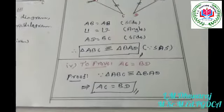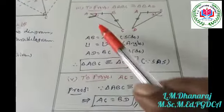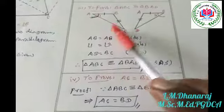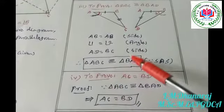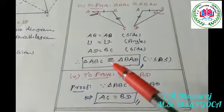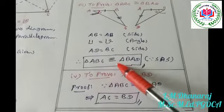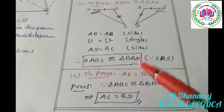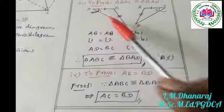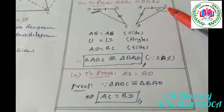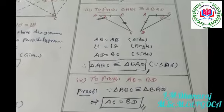Now we have to prove that AC is equal to BD. From the above subdivision, we already proved triangle ABC is congruent to triangle BAD, and this proves that side AC is equal to side BD.